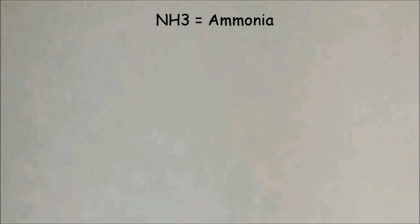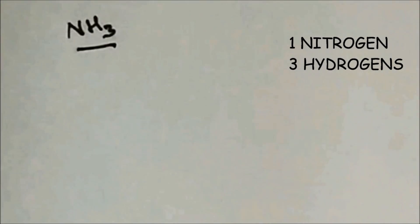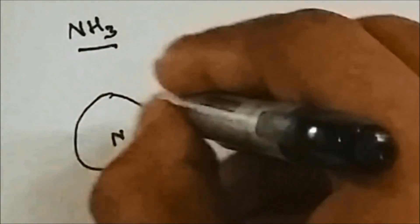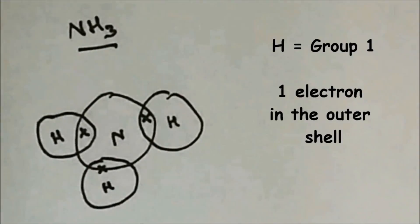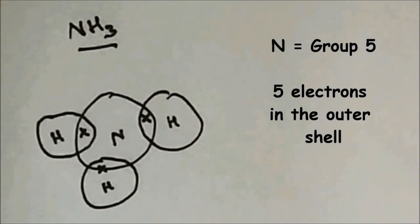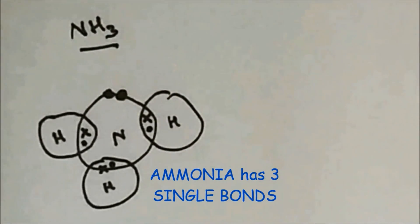The next molecule is ammonia, NH₃. Ammonia has one nitrogen and three hydrogen atoms, so nitrogen is in the center surrounded by three hydrogens. Each hydrogen has one electron in the outer shell. Nitrogen is in group 5, so it has five electrons in the outer shell — three are involved in the overlap and the leftover two are placed outside the overlap. So ammonia has three single covalent bonds.